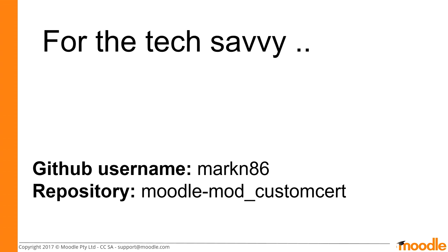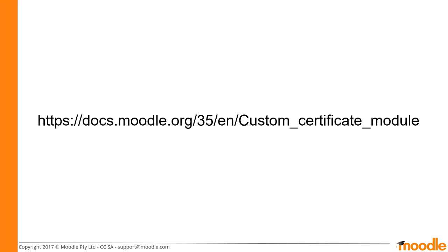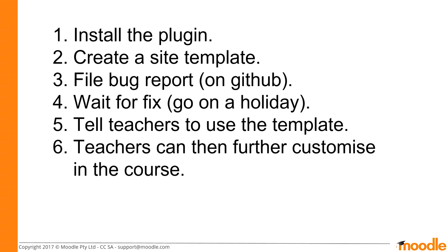There's a documentation link — just look up custom certificate module documentation and you should find the page. So basically how you would go about using this effectively: as you install the plugin you'll create a site template, file a bug report because there probably will be some. Wait for a fix — that will take a while because I do this in my spare time. Then tell teachers to use the site template, and teachers can further customize it if they want.